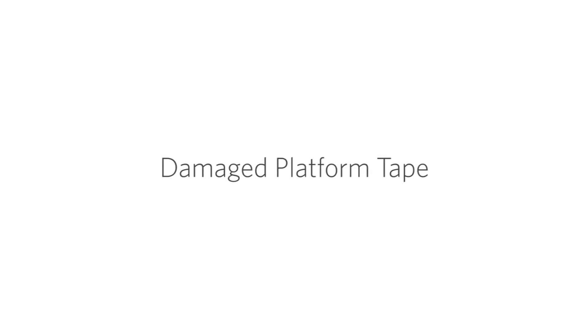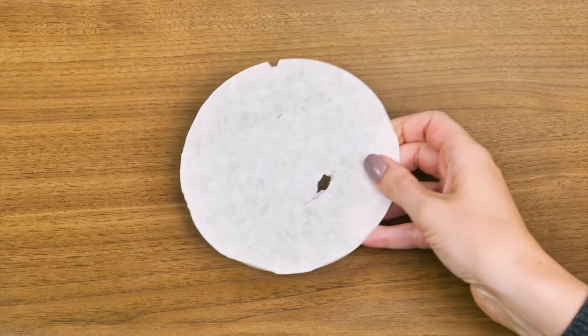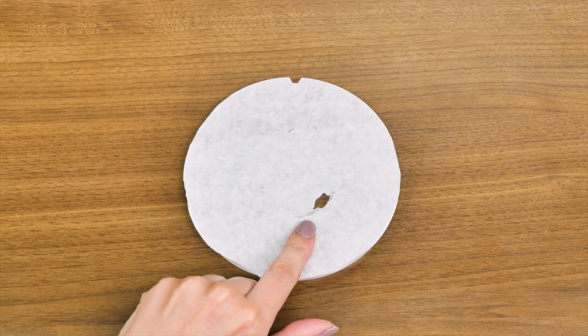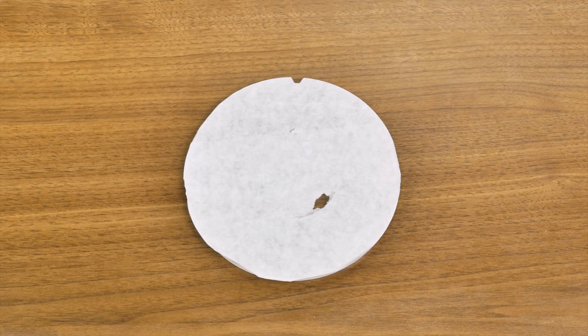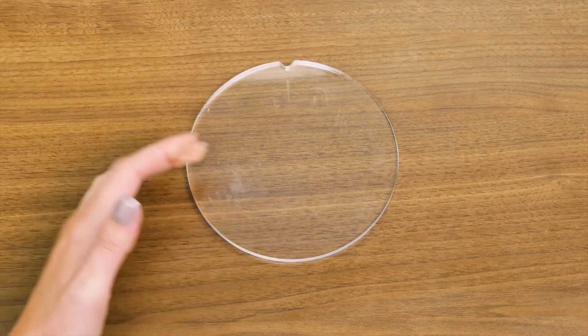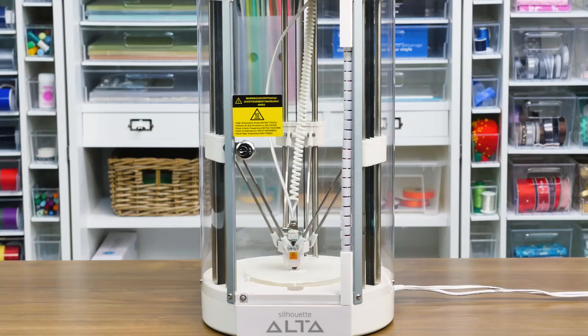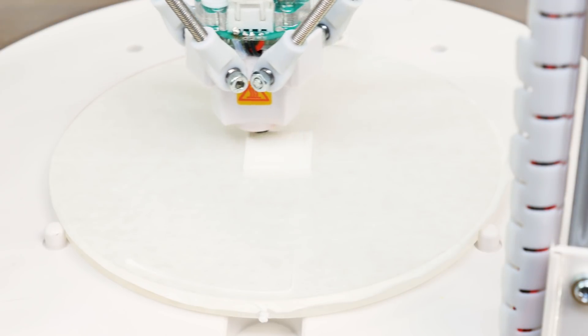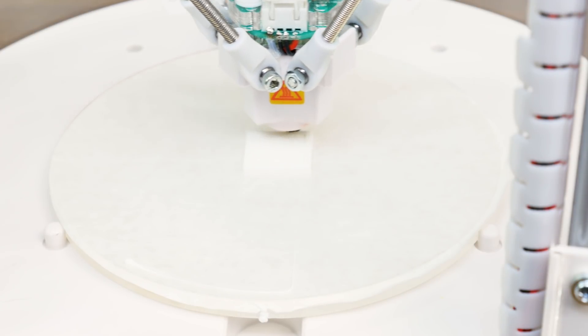Damaged platform tape. If you damaged the platform tape at all when you removed your 3D object, you may need to replace it before you attempt to print something else. Most platform tape sheets will last for about 5 to 10 prints, but that number will vary based on your experience and the settings of each printed object.